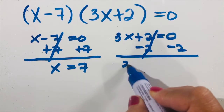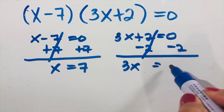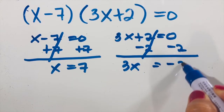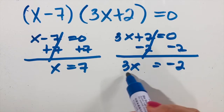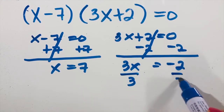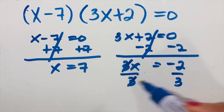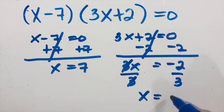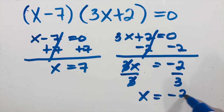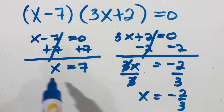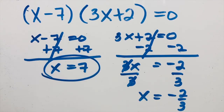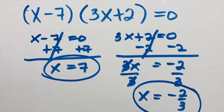For the second factor: 3x plus two equals zero. Subtract two on both sides — bring down 3x, and zero minus two is negative two. To find x, divide both sides by three, so x equals negative two over three. Therefore, the solutions are x equals seven and x equals negative two-thirds. To check, please do it on your own.